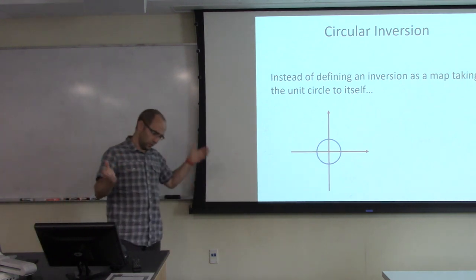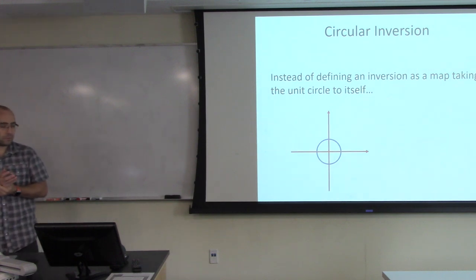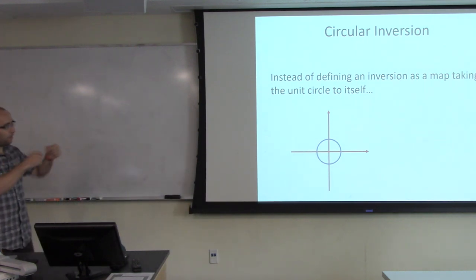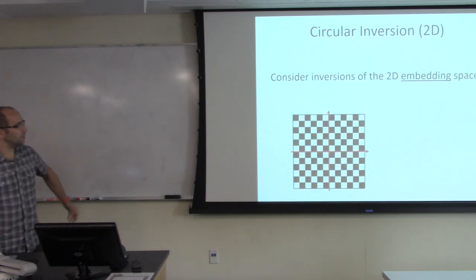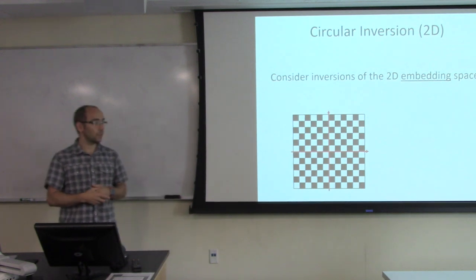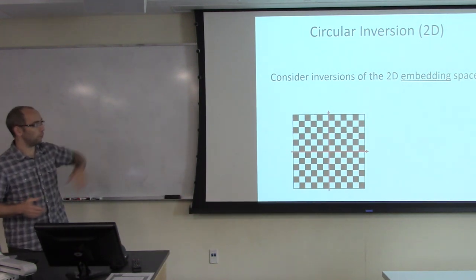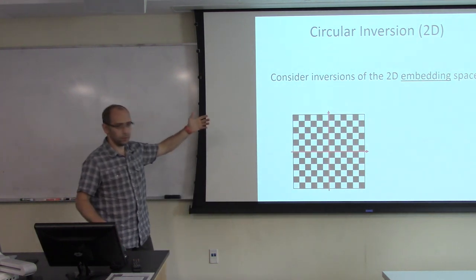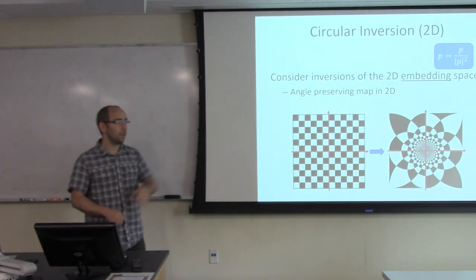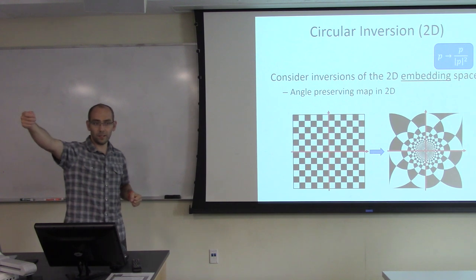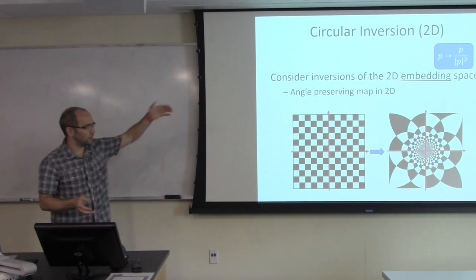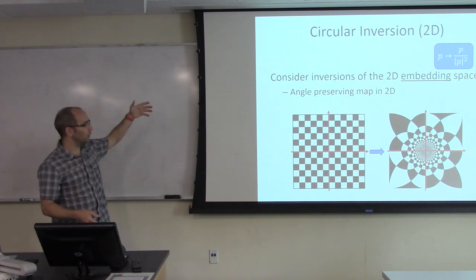We need to talk about what an inversion is — rotation you're reasonably comfortable with. I'll look at this in the context of a circle instead of a sphere. In the complex plane, inversions are essentially the map taking point P to P over the norm of P squared — so P inside the unit circle goes outside, P outside goes in, infinity goes to the origin, and the origin goes to infinity. The unit circle maps to itself. This is a conformal map: circles map to circles.